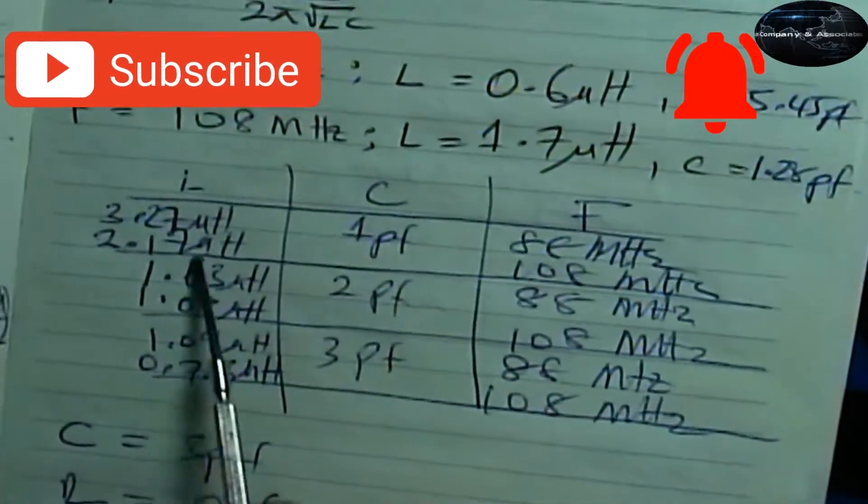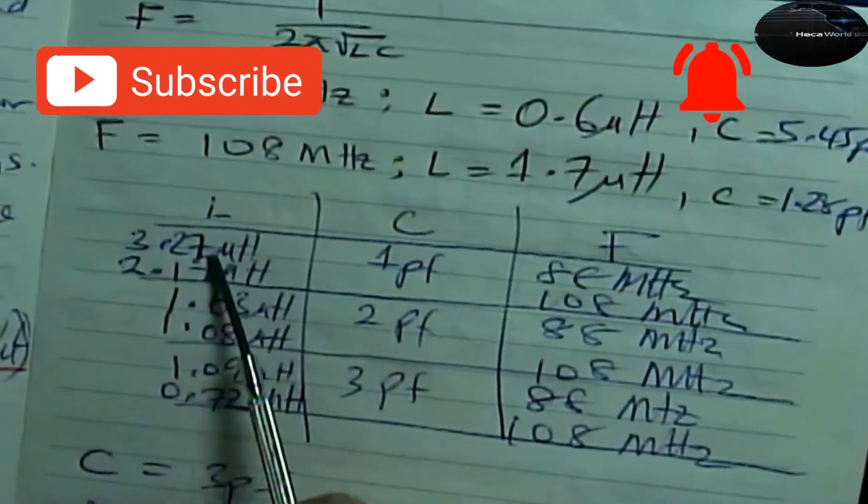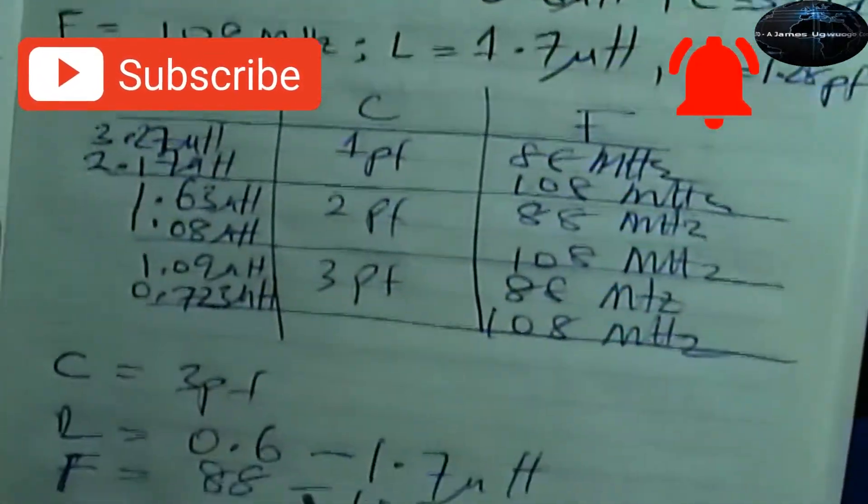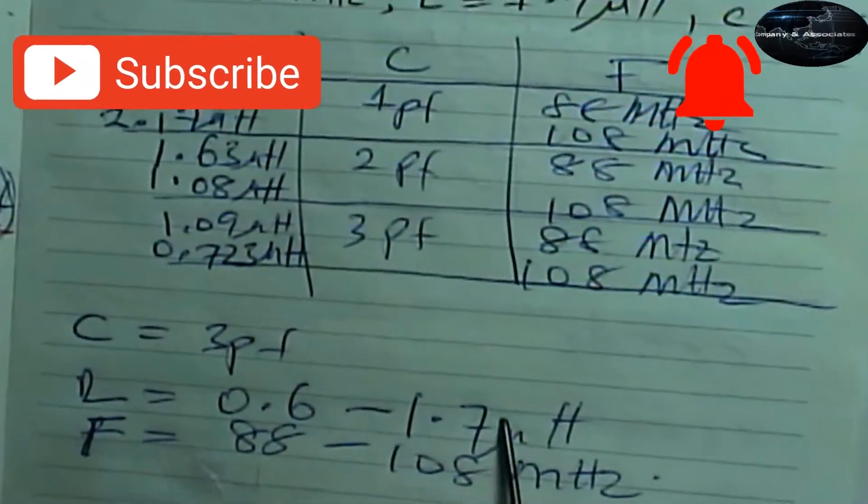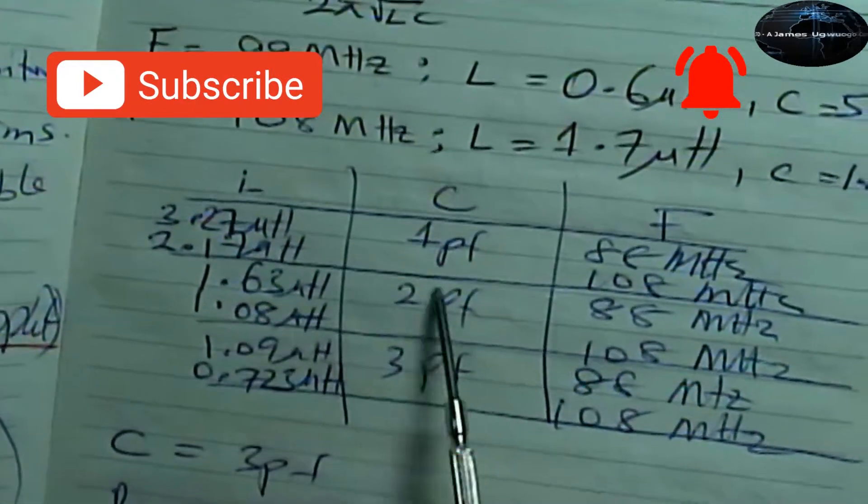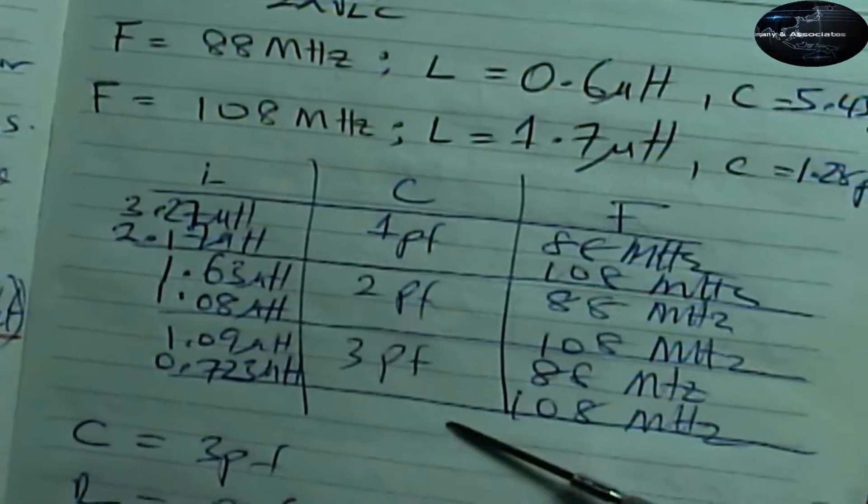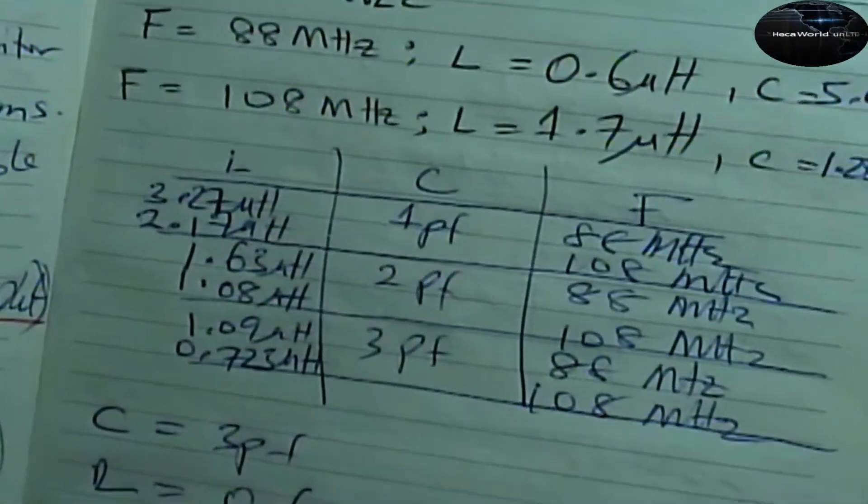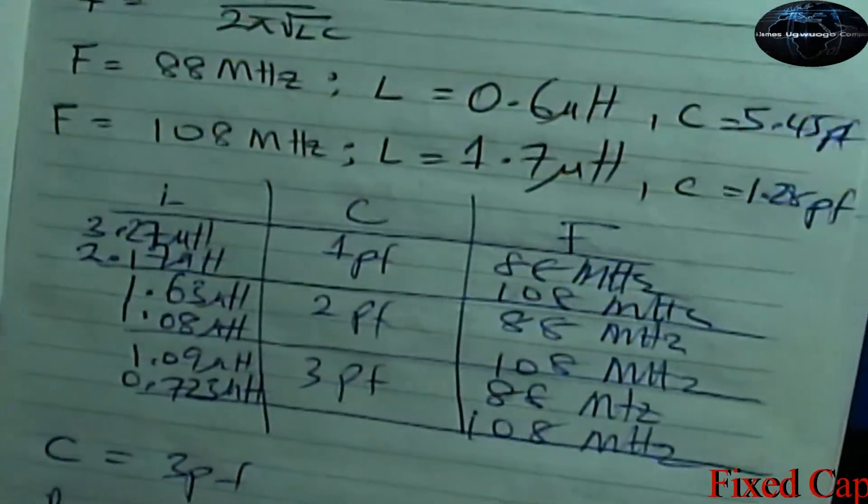But we can't use one picofarad because one picofarad requires that our inductor goes from 3.27 to 2.17, and our inductor doesn't get to that range. Our inductor is only from 0.6 to 1.7. So when you have this kind of inductor, try to go for two picofarads or three picofarads to cover this range. If you're using other ranges, do your calculation and find out what works best for your inductors and capacitors. Remember your tank circuit or your resonance circuit is a function of the inductance and capacitance.